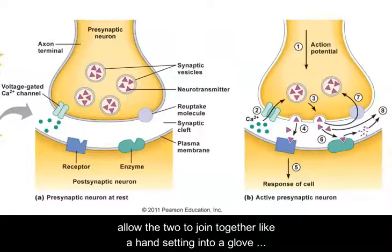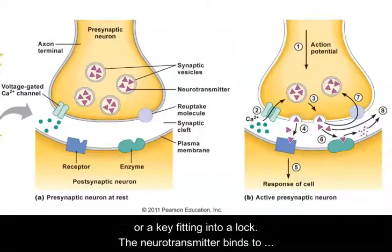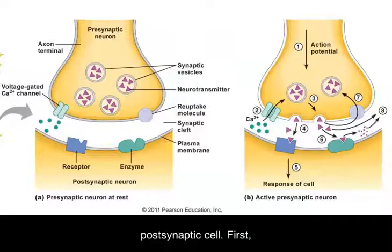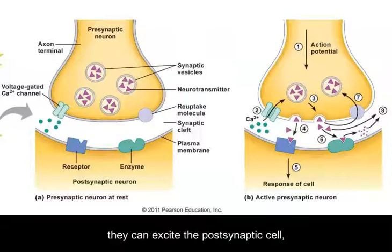The neurotransmitter binding to the receptor causes one of three effects on the postsynaptic cell. First, it can excite the postsynaptic cell, causing the voltage to increase, called an excitatory postsynaptic potential, or an EPSP.